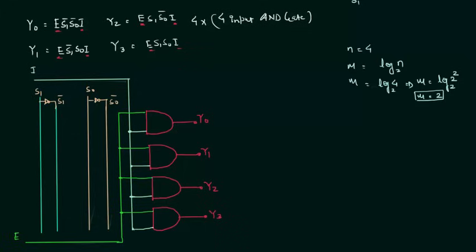For y0 we have s1 complement, s0 complement. So we will take s0 complement. From here I will have s1 complement. For y1 we have s1 complement, s0. We need s0.